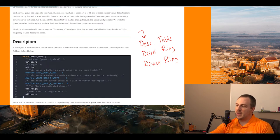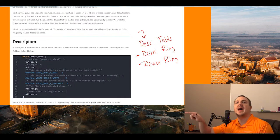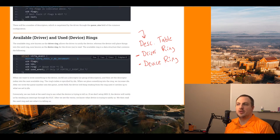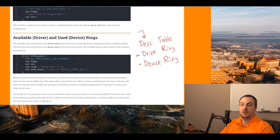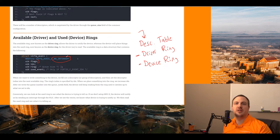The driver ring — remember, the driver is us, the operating system writing the driver, whereas the device is what we're communicating to. The driver ring's job is to point to the descriptors we want to pass off to the device. The driver ring, also formerly called the available ring, has four fields. We have flags; the only flag we can have is called no interrupt.